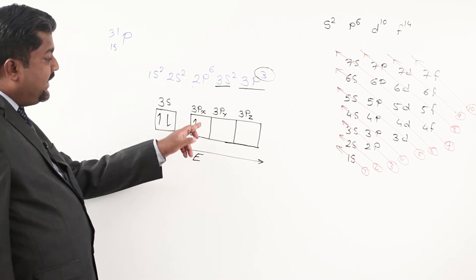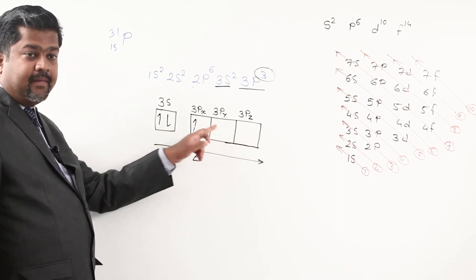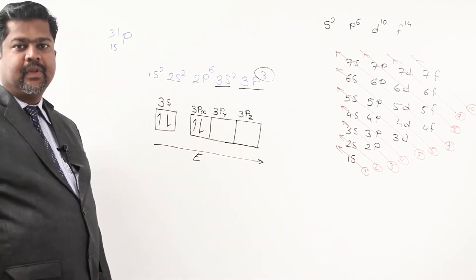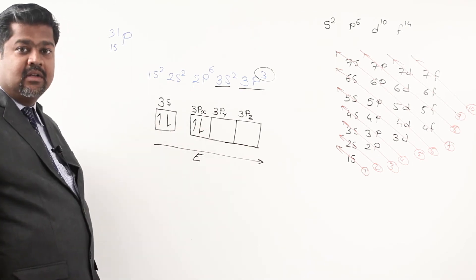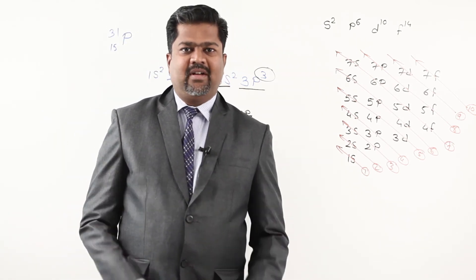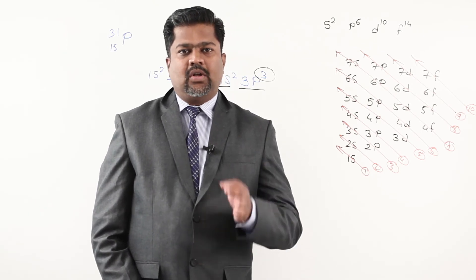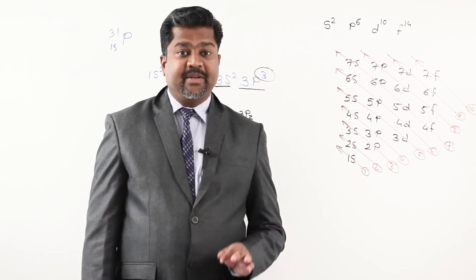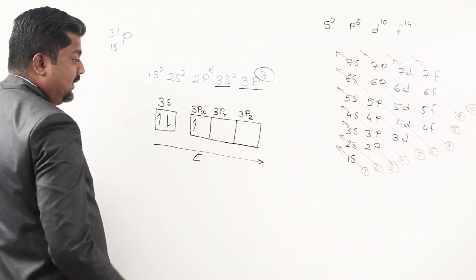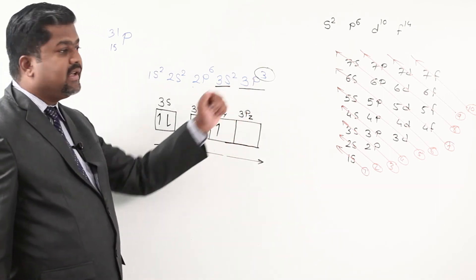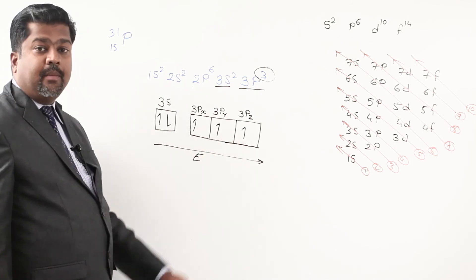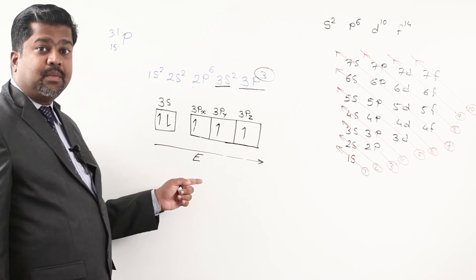So in the case of phosphorus with 3p3, I split it out: 3px1, 3py1, 3pz1. Instead of writing 3p3, I write 3px1 3py1 3pz1. So the full electronic configuration of phosphorus is: 1s2, 2s2, 2p6, 3s2, 3px1 3py1 3pz1. This is by applying Hund's rule of maximum multiplicity.